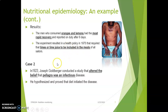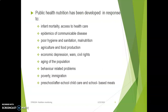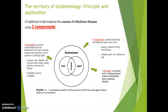The second case is Joseph Goldberger. He changed the belief that pellagra was caused by an infectious disease. It turned out pellagra is not caused by a contagious disease but by nutritional deficiency. He hypothesized and proved that diet initiated the disease — showing that deficiency of a specific nutrient causes pellagra. Therefore, public health interventions were developed in response to poor diet, hygiene, and agricultural conditions of the population.